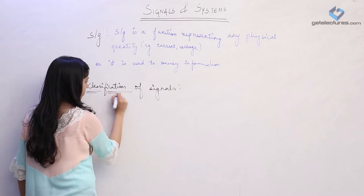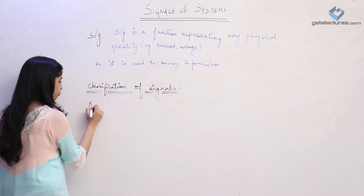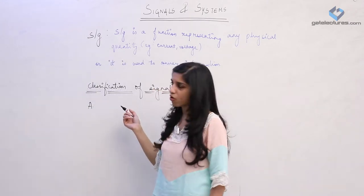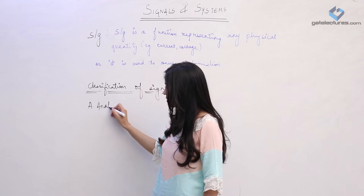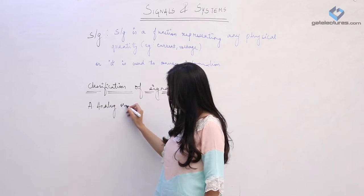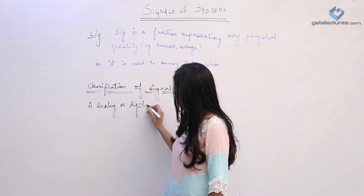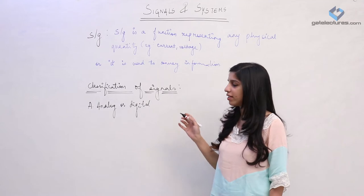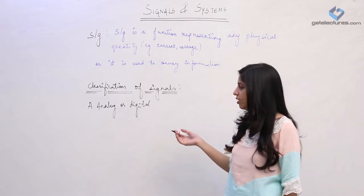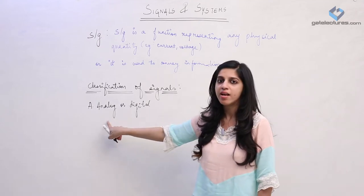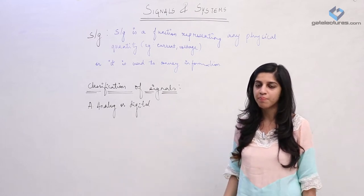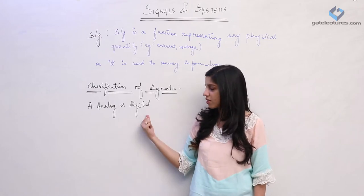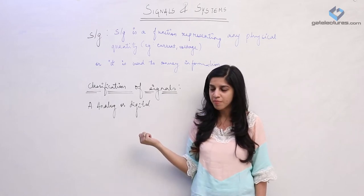Firstly, we are going to classify signals based on whether they are analog or digital. What is the difference between analog and digital signals? If a signal can take any real value, it is known as an analog signal. If a signal takes only particular values - for example, only integral values as its output - then the signal is known as a digital signal.